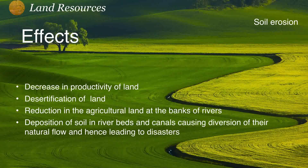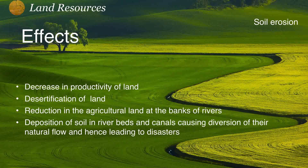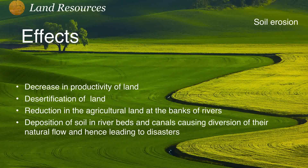The effects of soil erosion include a decrease in the productivity of land, desertification, and reduction in agricultural land along riverbanks. There is also deposition of soil in riverbeds and canals, causing diversion of their natural flow and leading to disasters.